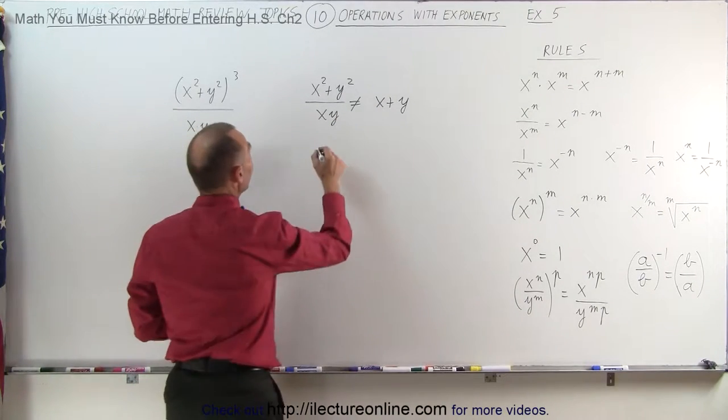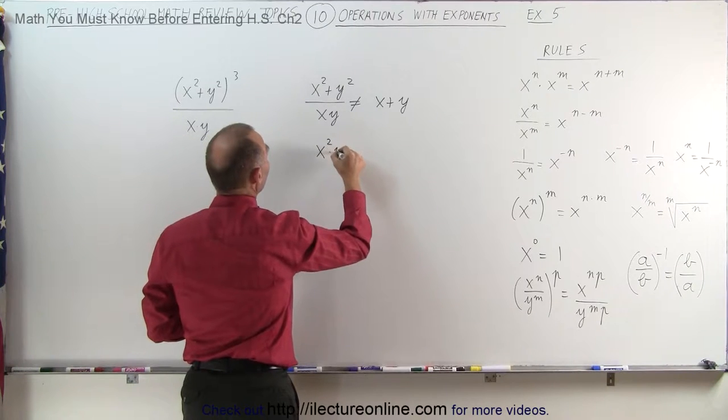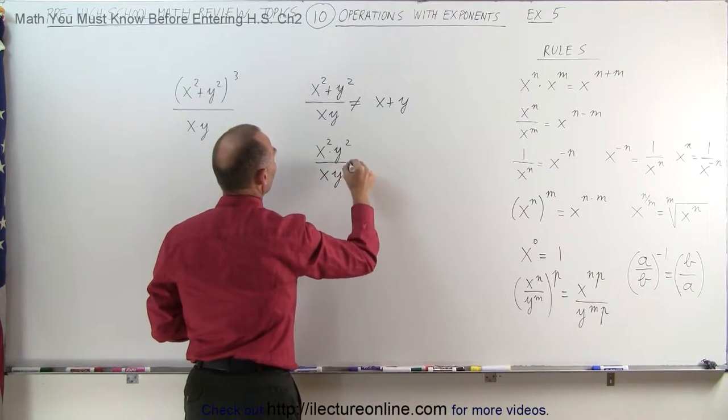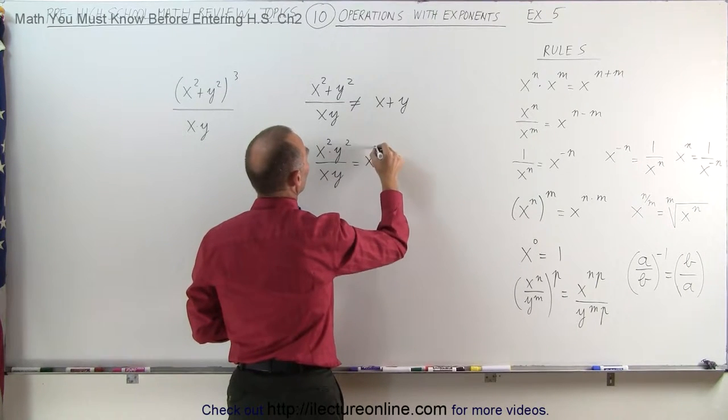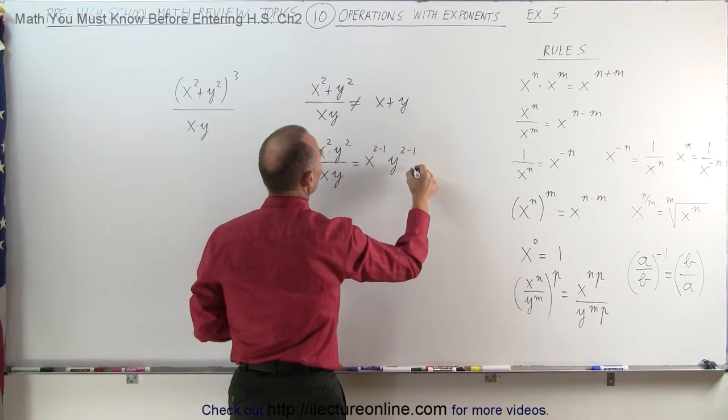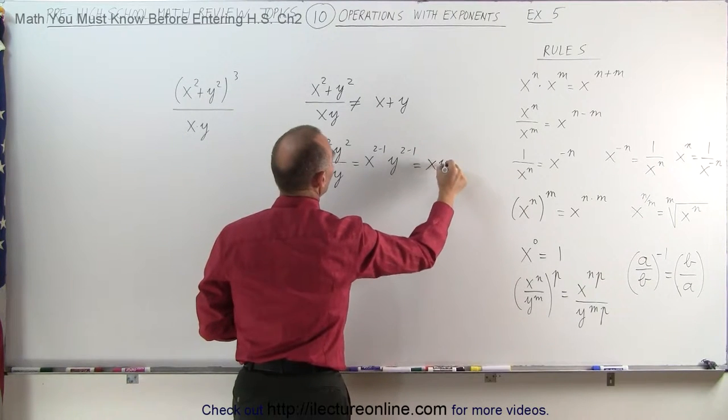However, if we had this instead, x squared times y squared divided by x times y, this would be equal to, since this is to the first power, x to the 2 minus 1, times y to the 2 minus 1, which would be simply x times y.